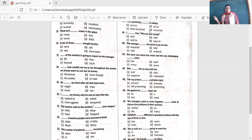Dash how careful we try to be throughout the month. We always seem to run out of money. Whenever. Whenever. No. Even though. How? No. No matter how. Yes. In case. Not correct. So no matter how careful we try to be throughout the month, we always seem to run out of money. Okay. Right. Yes. So it is correct here.